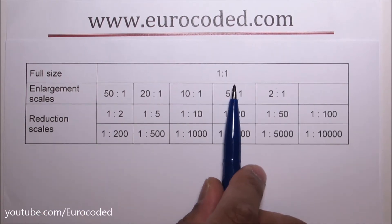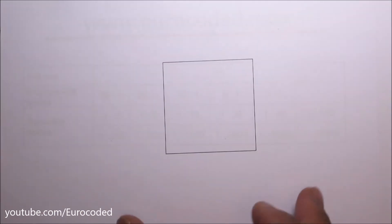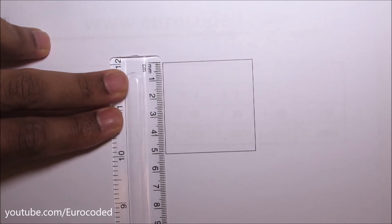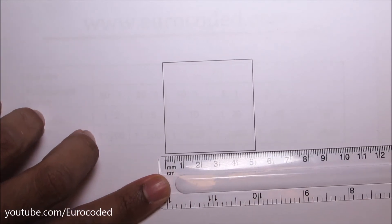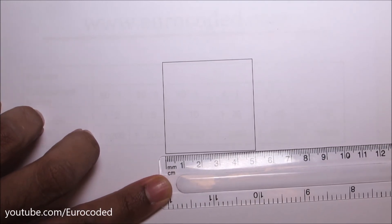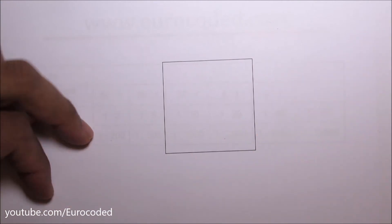Full scale is one to one. In this example we've drawn the element to full scale. The actual element itself is a five centimeter by five centimeter square and if you measure this you can see it is five centimeter this side and five centimeter this side. That means it's a full scale, also known as one to one scale.